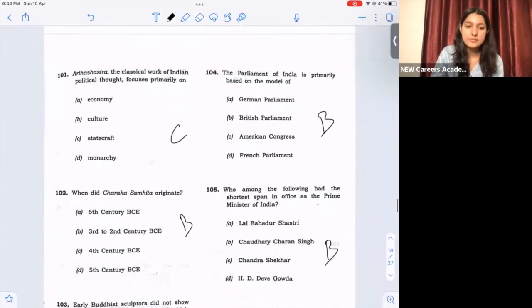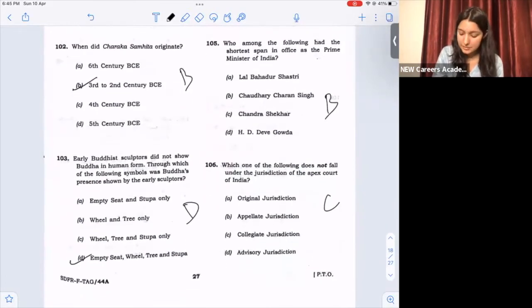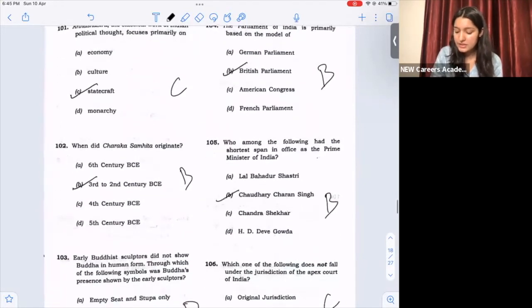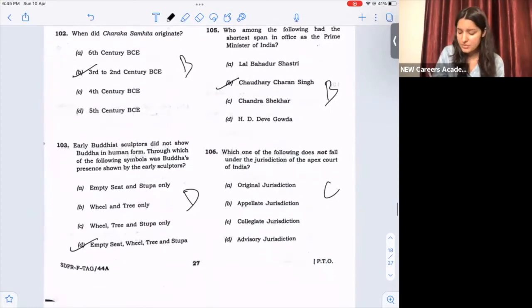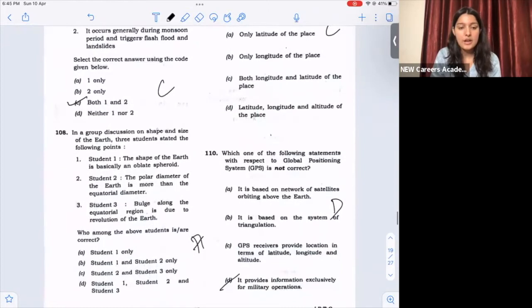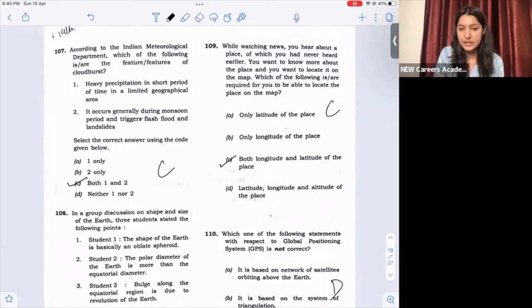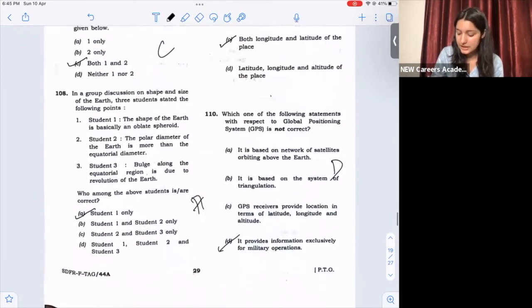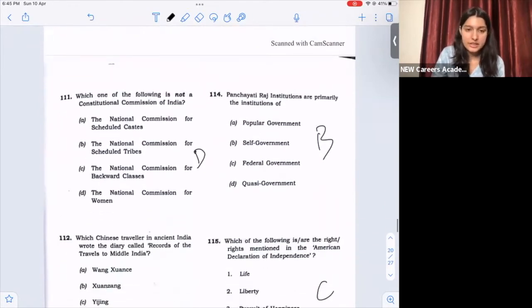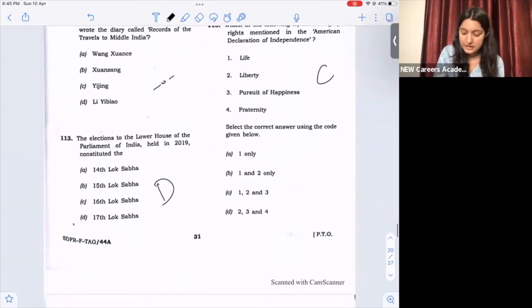Next questions. 101, option C, statecraft. 102, option B, 3rd to 2nd century BCE. 103, option D, empty seat, wheel, tree and stupa. 104, option B, British parliament. 105, option B, Chaudhary Charan Singh. 106, option C, collegial jurisdiction. 107, both 1 and 2 are correct statement, option C. 108, option A, student 1 only. 109, statement option 3, both longitude and latitude of the place. 110, option D, it provides information exclusively for military operations. 111, option D, the National Commission for Women. 112, this question is doubtful. 113, option D, 17th Lok Sabha. 114, option B, self-government.